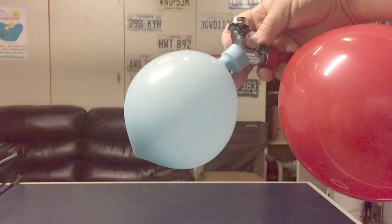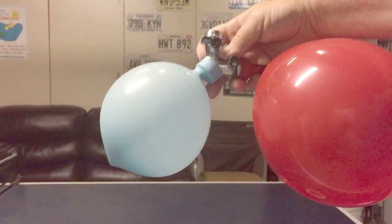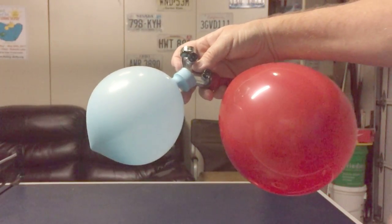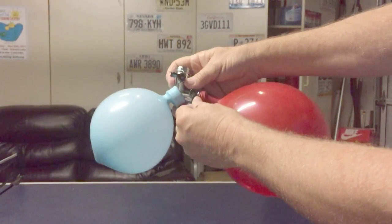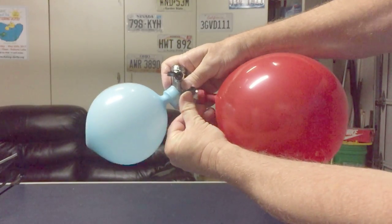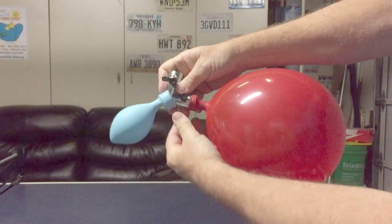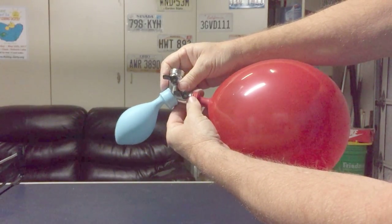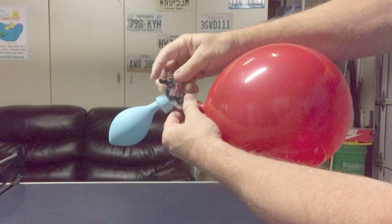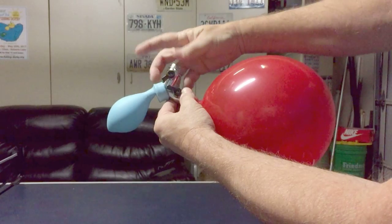The real question is why does the larger balloon expand? Well, when the valve is open, the air will flow from the balloon at the higher pressure to the balloon with the lower pressure. The lower pressure balloon will expand. The smaller balloon has the higher pressure. So when the valve is open, the smaller balloon pushes the air into the larger balloon and it becomes smaller, and the larger balloon becomes larger. The airflow ceases when the two balloons have equal pressure.